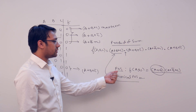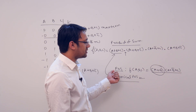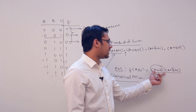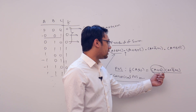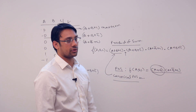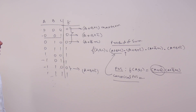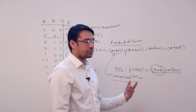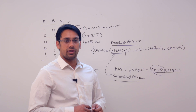In case of product of sum terms, it is not necessary that every product of sum term is canonical. For example, here we have a plus b but we don't have the variable c, therefore this expression is just representing a product of sum term but not a canonical product of sum term. So there is a difference between canonical and simple product of sum, in the same way as sum of product and canonical sum of product.